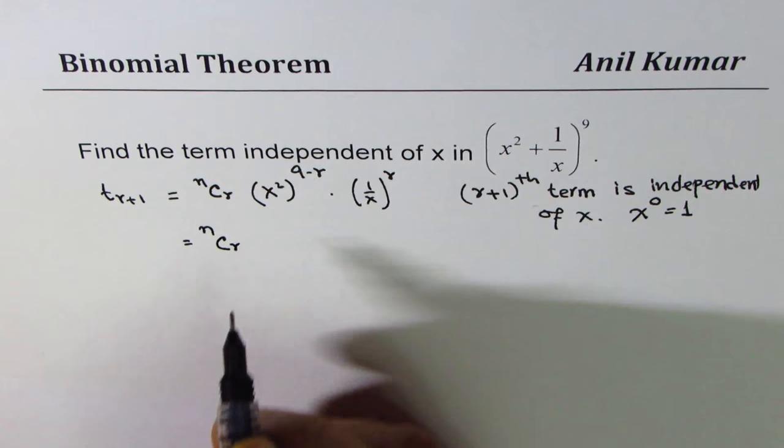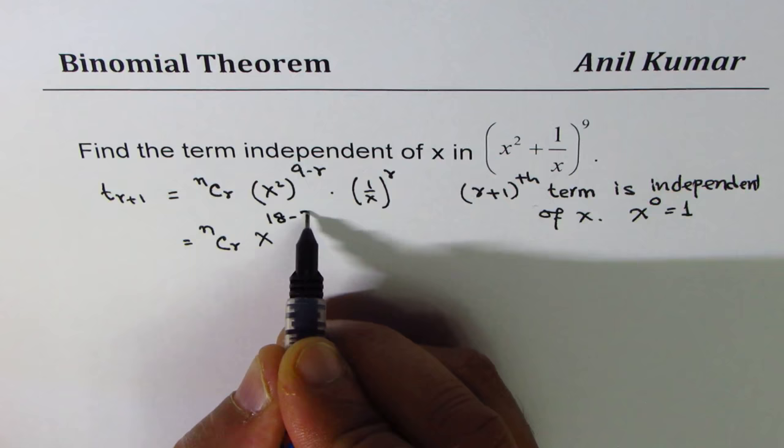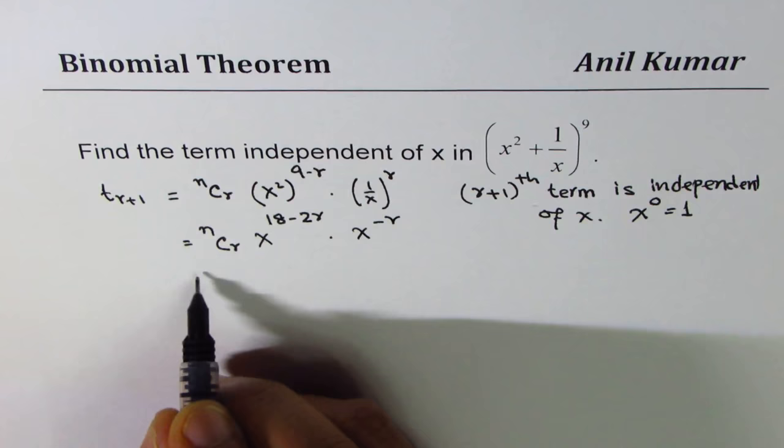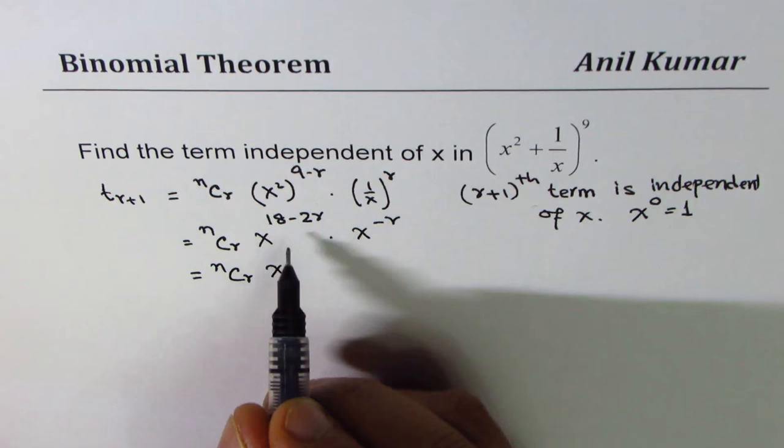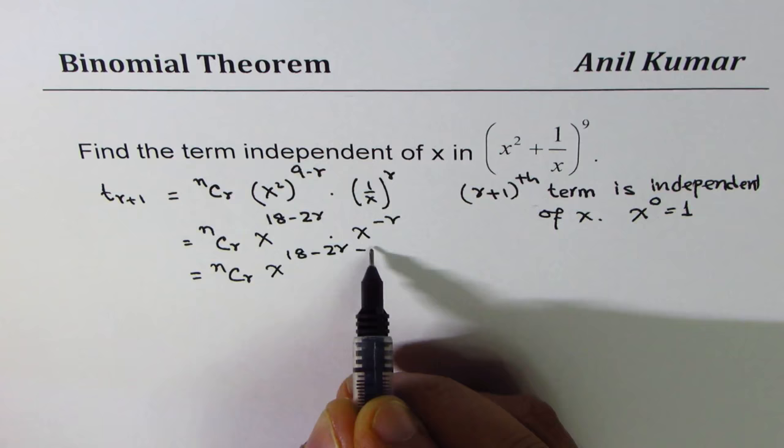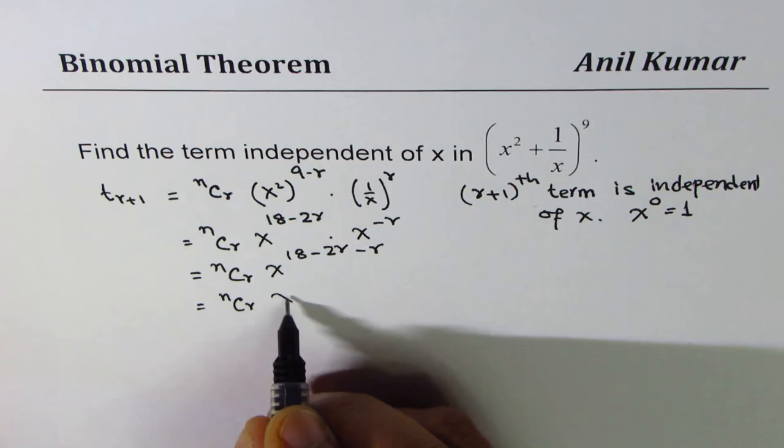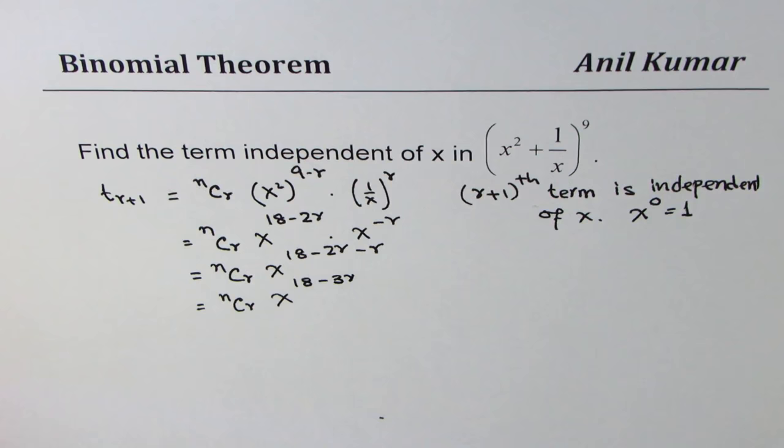Now, let's simplify this. What do we get? We get this as nCr, x to the power of 2 times 9, which is 18, minus 2r, times x to the power of minus r. So, we can combine this. We get nCr, x to the power of 18 minus 2r minus r, which is equal to nCr x to the power of 18 minus 3r.